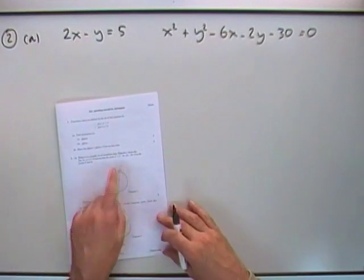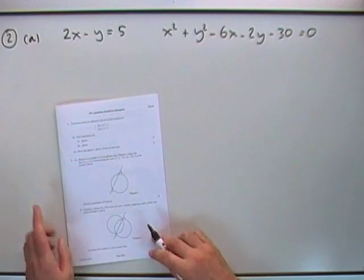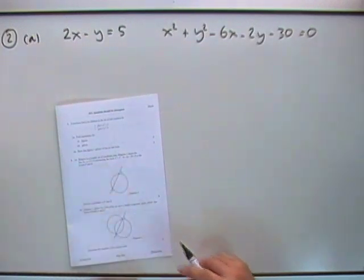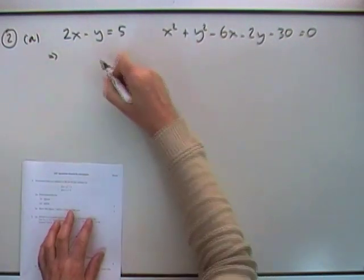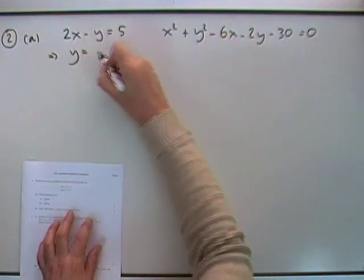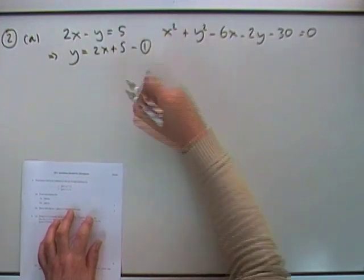Question 2. There's a circle drawing, here's its equation, and there's a line which intersects the circle and you have to find the points of contact. Well, get that into a suitable form for substituting, isolate a variable, y will do nicely. So I've got y equals 2x plus 5, I'll call that equation 1.